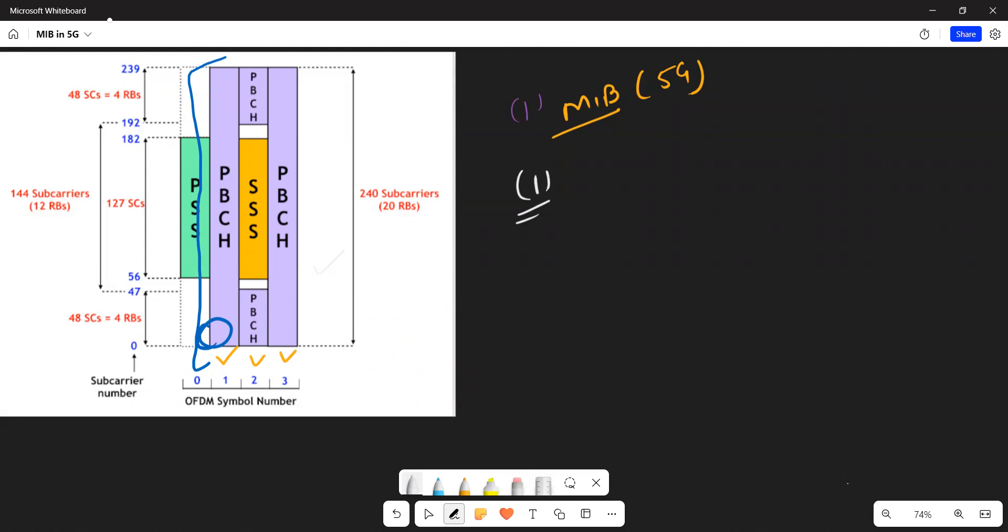The very first thing is MIB is transmitted over BCH transport channel and PBCH physical channel. This MIB comes under PBCH channel.